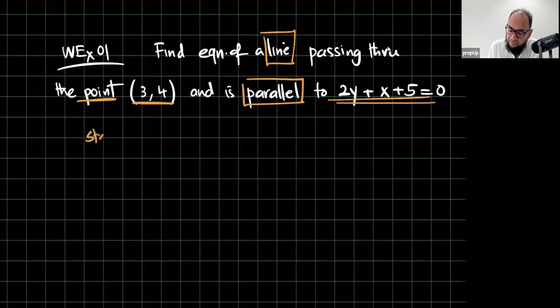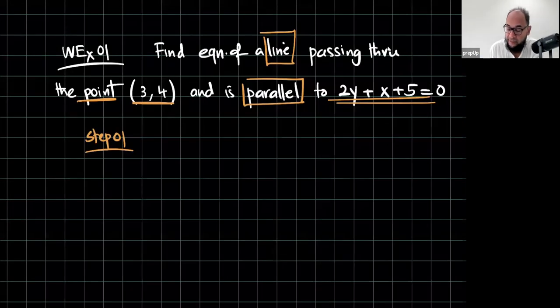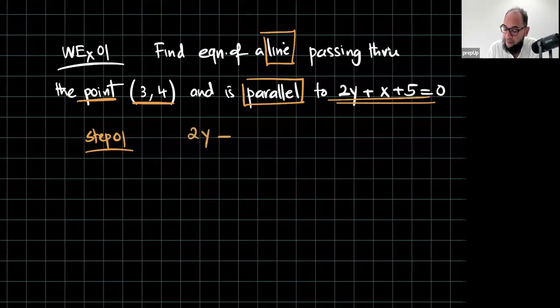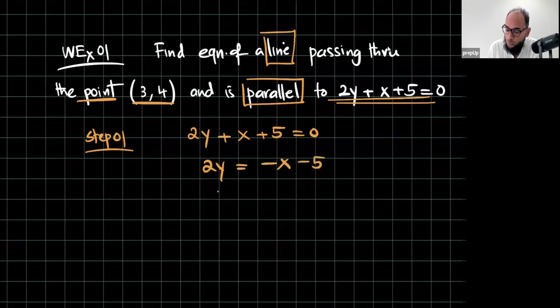Step number 1 is that, get this equation in the standard form. Yes, we love the standard form and we're going to use it. 2y + x + 5 = 0. 2y = -x - 5. y = -x/2 - 5/2. Just focus on the coefficient of x. So, the coefficient of x is negative half, that is the gradient of this line.